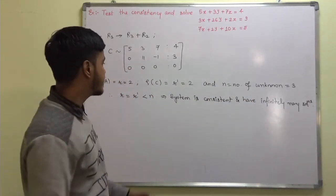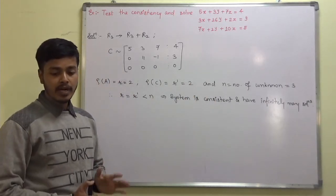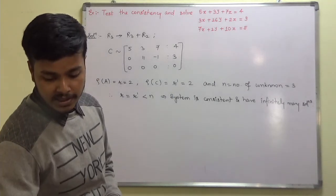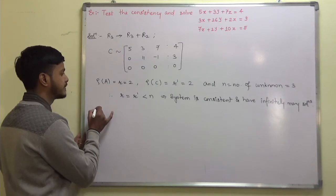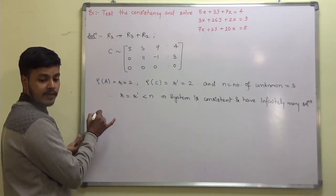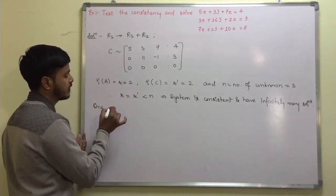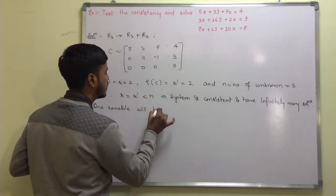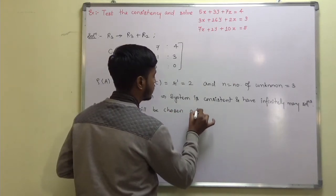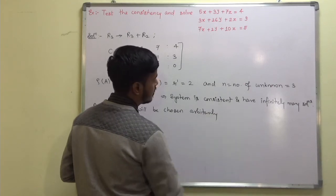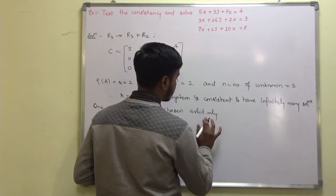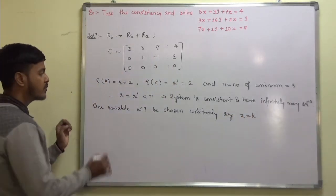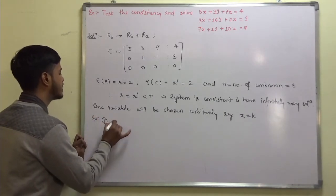We will assign N minus R variables an arbitrary value. N is 3, R is 2, so N minus R is 1. We'll assign 1 arbitrary value to 1 variable. One variable will be chosen arbitrarily — say Z is equal to K. Now, from equation 1, Ax = B, using the row-reduced matrix A as [5, 3, 7; 0, 11, −1; 0, 0, 0], operating on X, Y, Z equals [4, 3, 0].